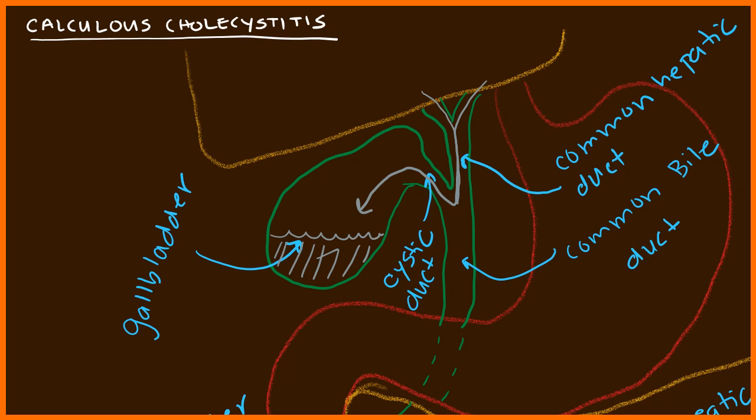Every time you eat fatty food, the gallbladder contracts and you secrete bile to help digest those fatty foods. However, in certain circumstances, you can form a gallstone in your gallbladder. As the gallbladder is contracting, sometimes this gallstone can get lodged into the cystic duct.